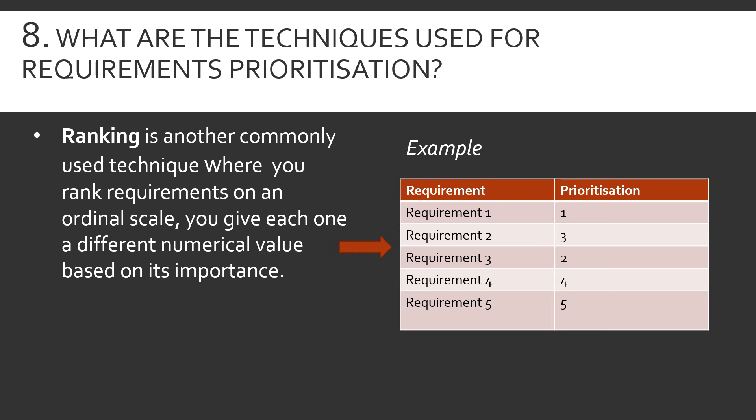The next technique is ranking. There are scenarios where the business says seven out of ten requirements are 'must.' When you go back to the engineering team, they need priorities among those musts. So you go back to the business and ask them to rank those seven requirements based on highest priority, assigning numbers one through seven. This gives the engineering team a clear priority order to design, develop, and deliver requirements with the highest business value first.